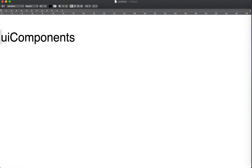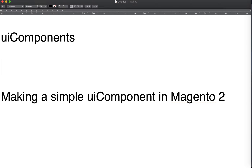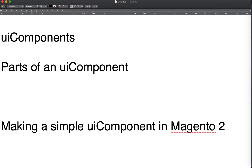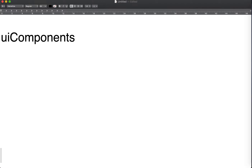That might be the reason why people find it difficult, but once you understand how UI components work, once you understand the structure of a UI component and start to use them, I guarantee it's not that hard. So what we're going to be doing in this video is making a simple UI component in Magento 2. First we'll explain what UI components are, then we'll see the parts of a UI component, and finally the technologies used to render it.